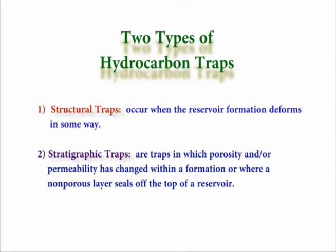Let's talk about the two primary types of hydrocarbon traps. First, there are structural traps. Structural traps occur when the reservoir formation deforms in some way. Second, there are stratigraphic traps. Stratigraphic traps are traps in which the porosity and/or permeability has changed within the formation, or when a non-porous layer seals off the top of the reservoir.